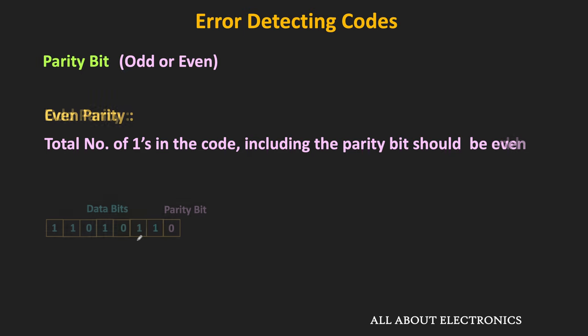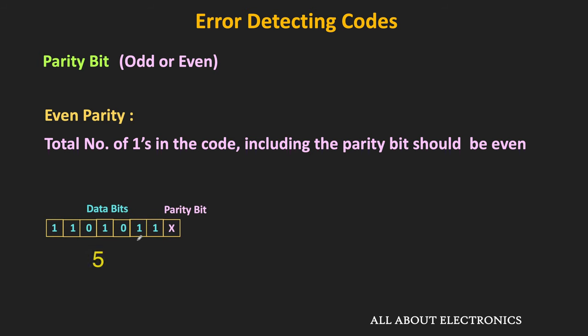Similarly, in case of even parity, the total number of 1s in the code should be equal to even. For example, in this code there are 5 number of 1s in the data bits. That means this parity bit should be equal to 1, so that the total number of 1s in this code remains even. In another example, the total number of 1s in this data is equal to 4. That means this parity bit should be equal to 0, so that the total number of 1s in this code remains even.